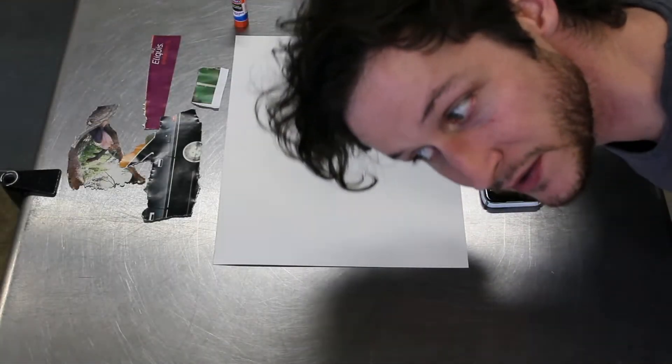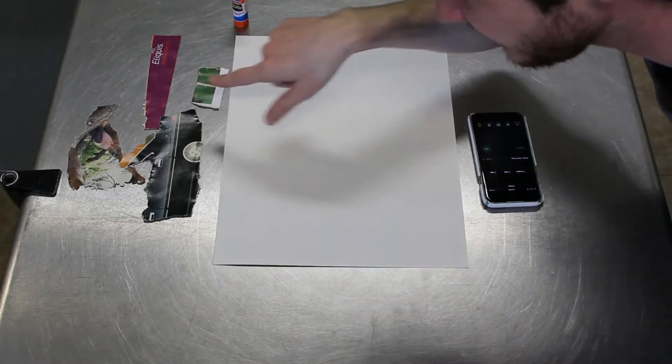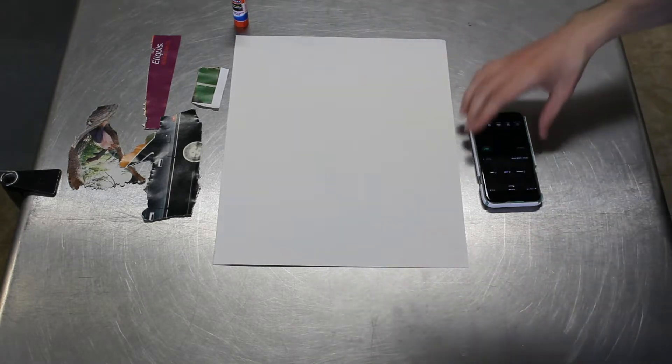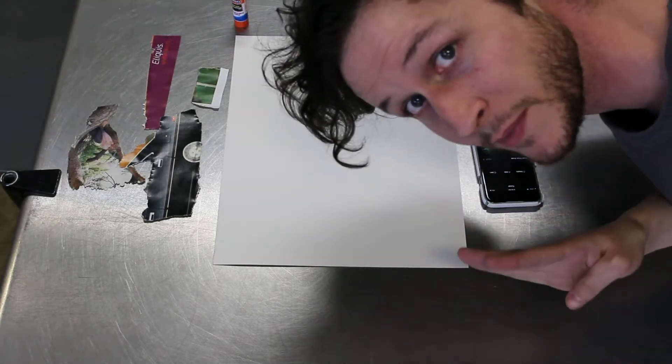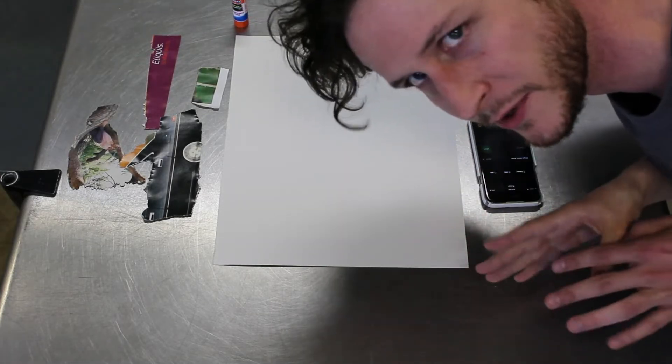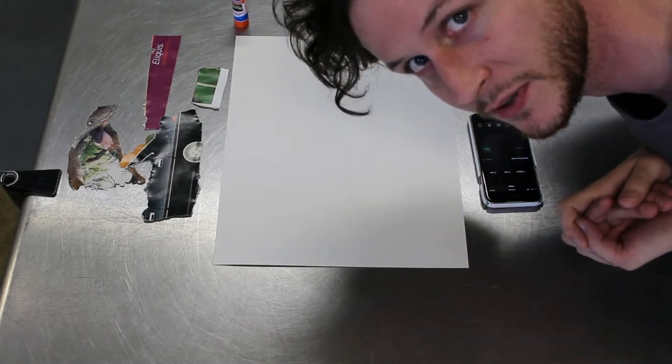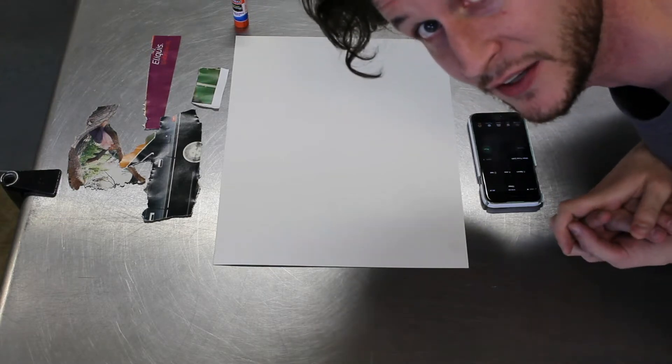Alright guys, we've got everything set up. We've got our torn pieces over here. We've got our glue and we've got our piece of paper and our timer. We're going to set it for four minutes to do a collage. Take some time with it. Figure out how you want it to look on the piece of paper and then glue it down. Let's get started.